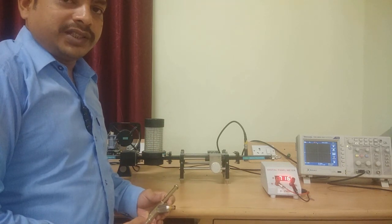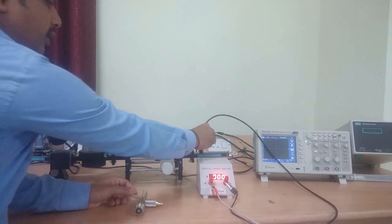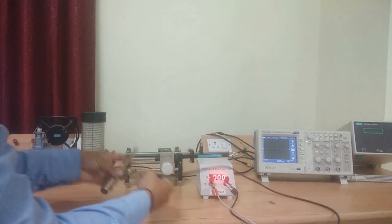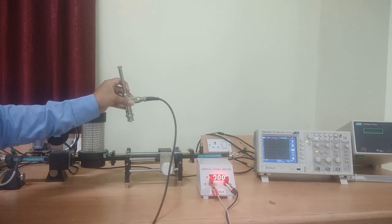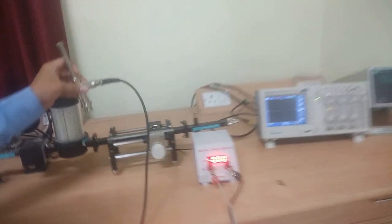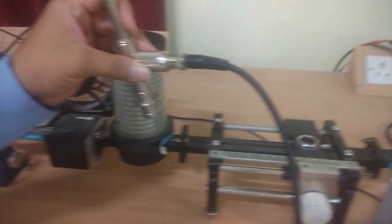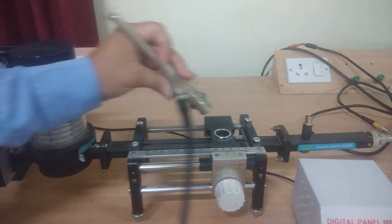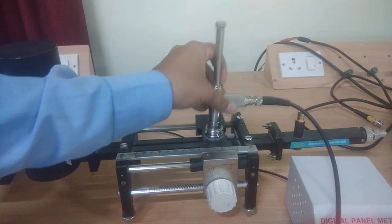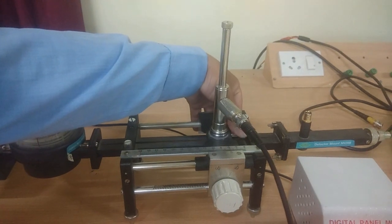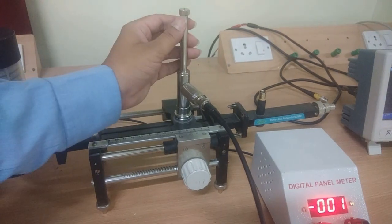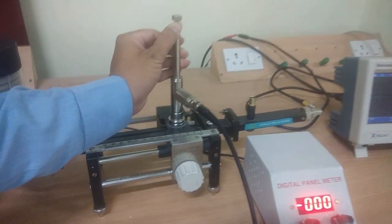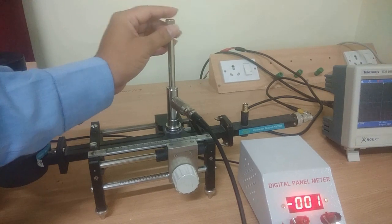The output probe is connected to crystal detector and inserted on slotted line. Here we can observe a hole to insert the crystal detector. After inserting, we have to tighten this screw. If you are getting low results, then we have to adjust this plunger to maximize our readings.